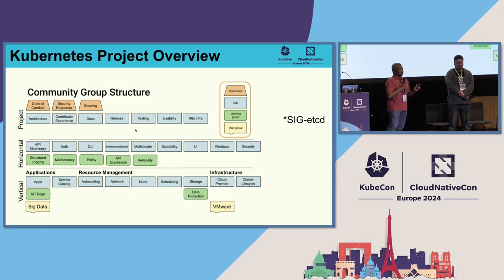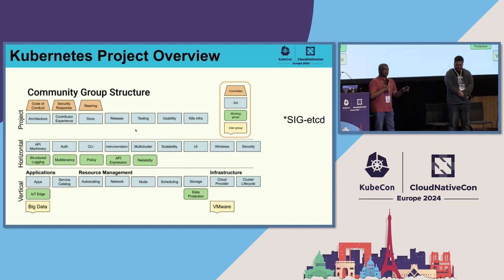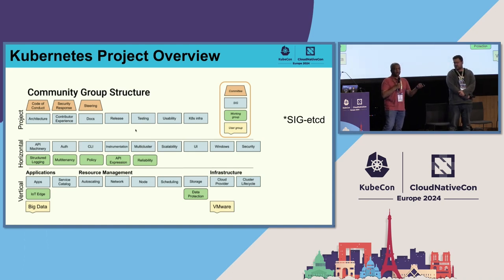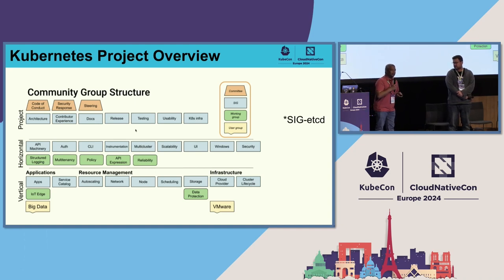Everybody writes a charter. All the different SIGs have a well-defined, well-scoped charter covering which repositories, what areas they work on, how they want to do it. Most SIGs have multiple chairs and technical leads. All the other SIGs doing in-depth work in specific areas essentially report up to SIG architecture. If there are conflicts between SIGs, they come to SIG architecture — whether they are disagreeing about something, need to make things better, or come up with ideas around extensibility points. SIG architecture is the common ground where we all meet together and decide on things going forward.